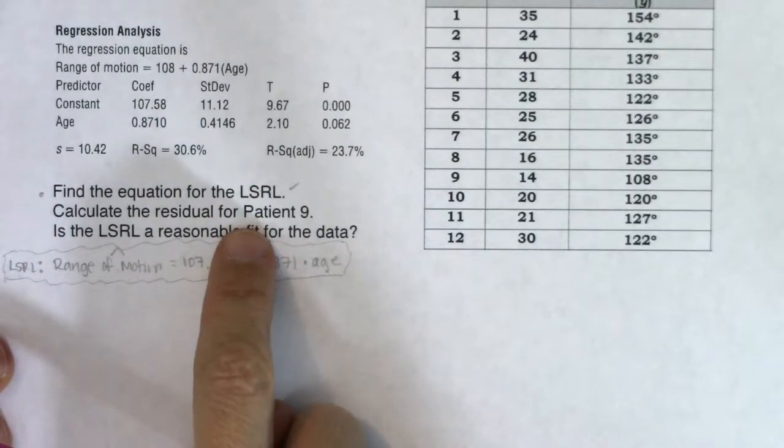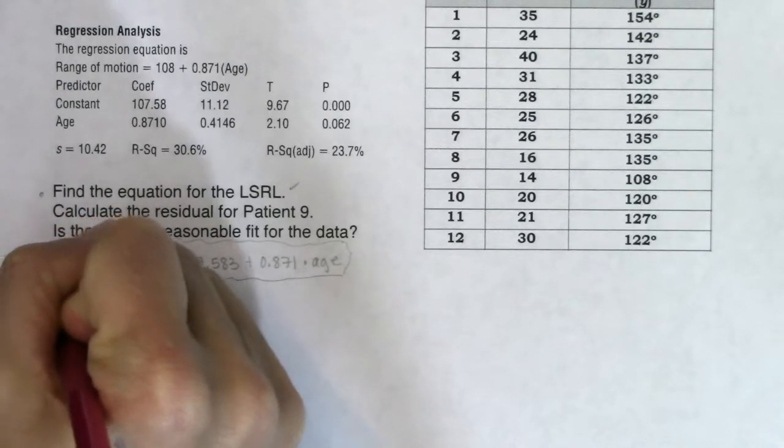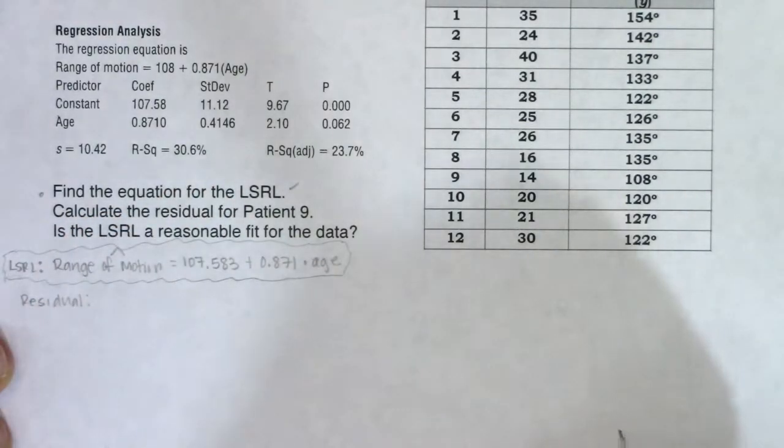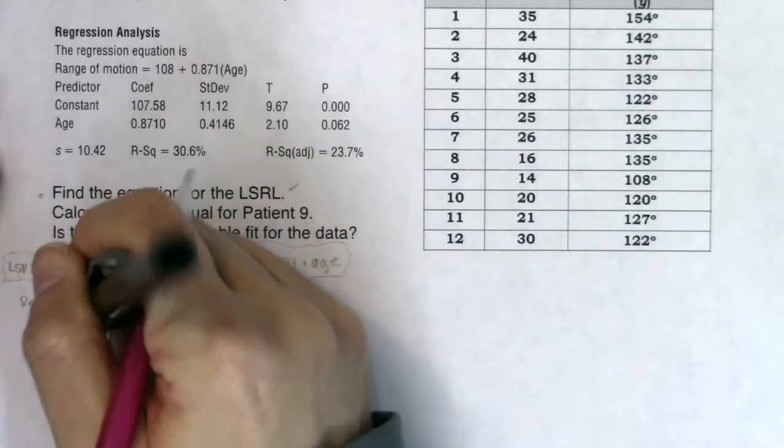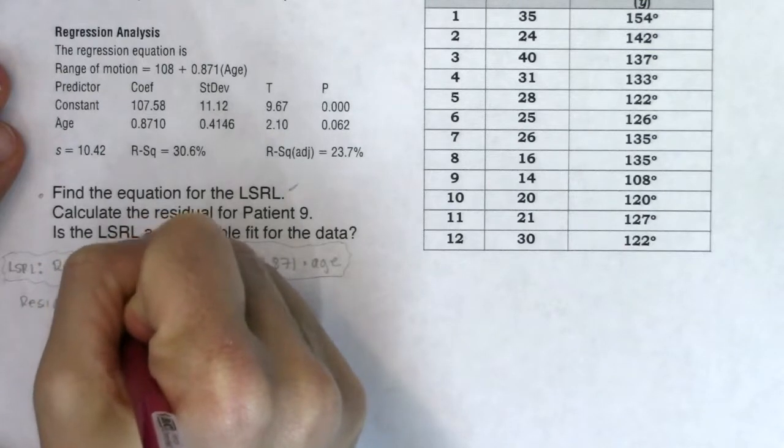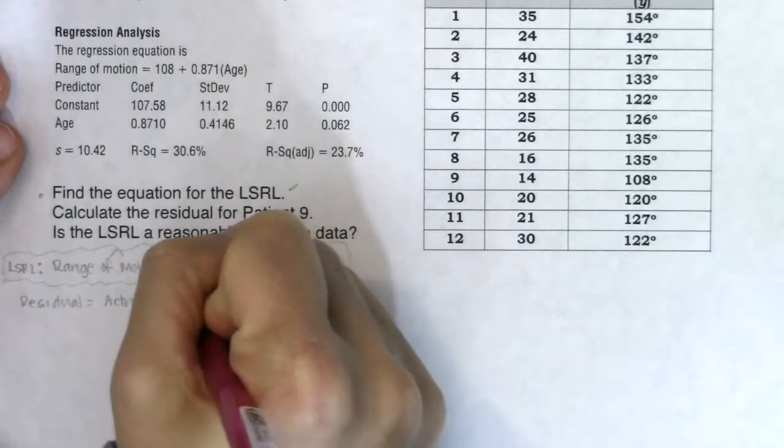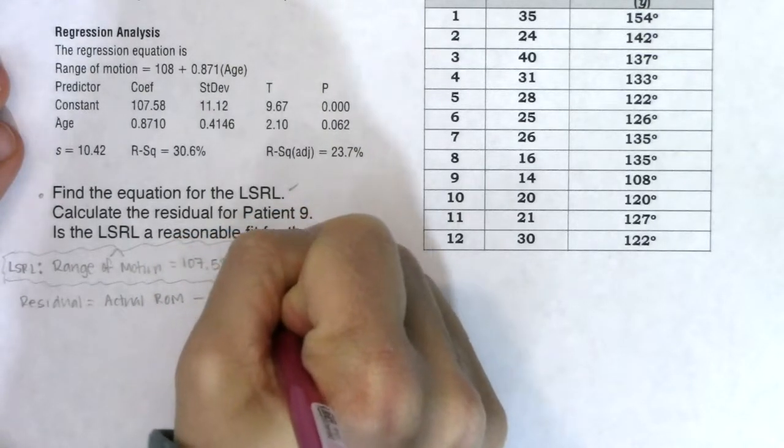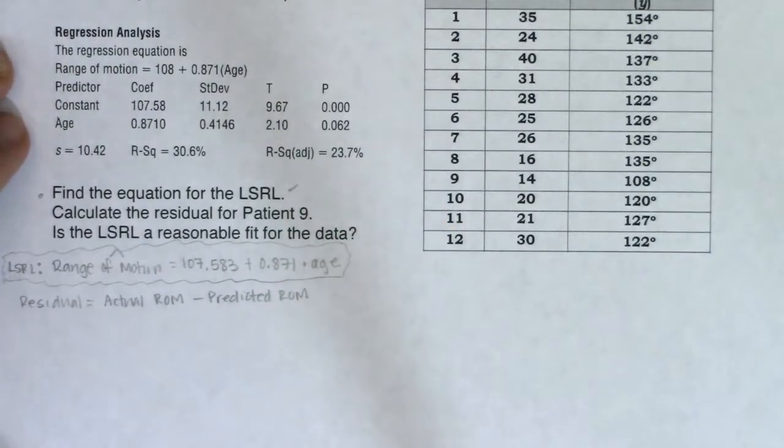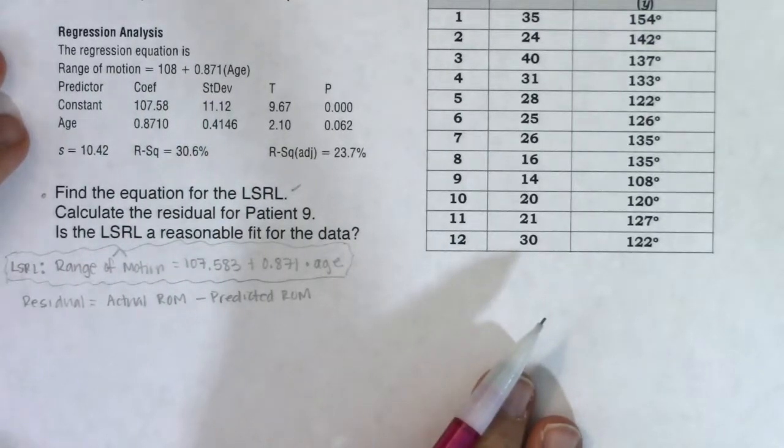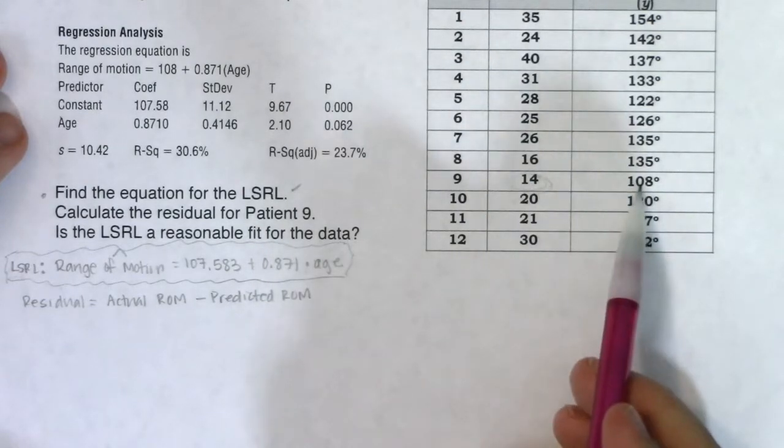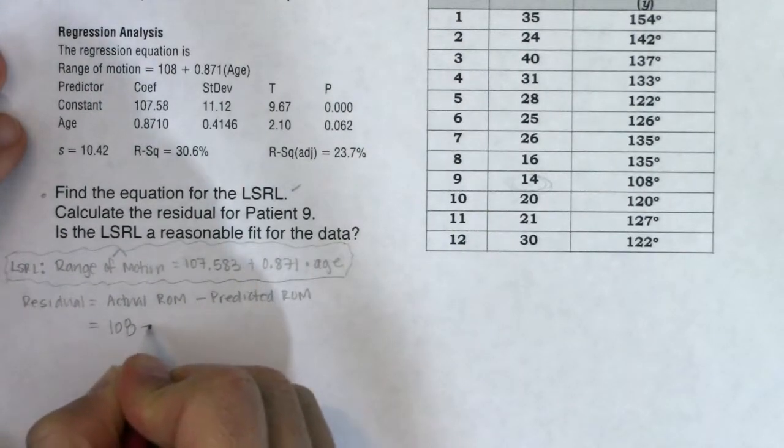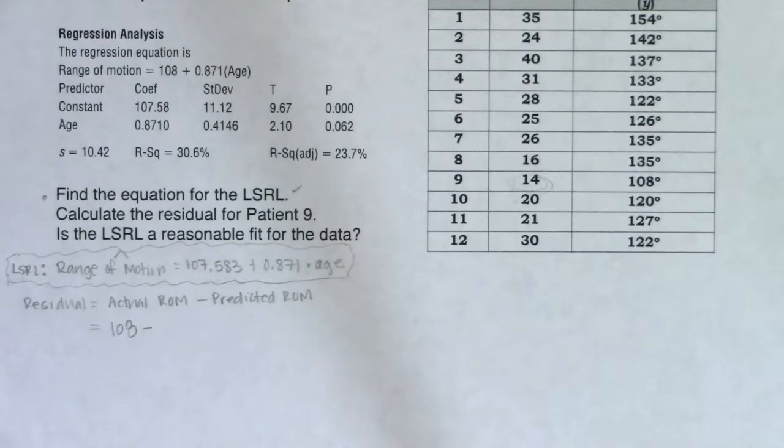Next is calculate the residual for patient 9. If I want residuals, residuals are always an actual Y value minus a predicted Y value. And if we remember, our Y values are range of motion. So for patient 9, I want to get this patient's actual range of motion minus predicted range of motion. For patient 9, let's go find patient 9 and see what this patient's actual range of motion was. It looks like this 14 year old kid had 108 degrees for their actual range of motion. You will always get your actual Y values from your raw data.